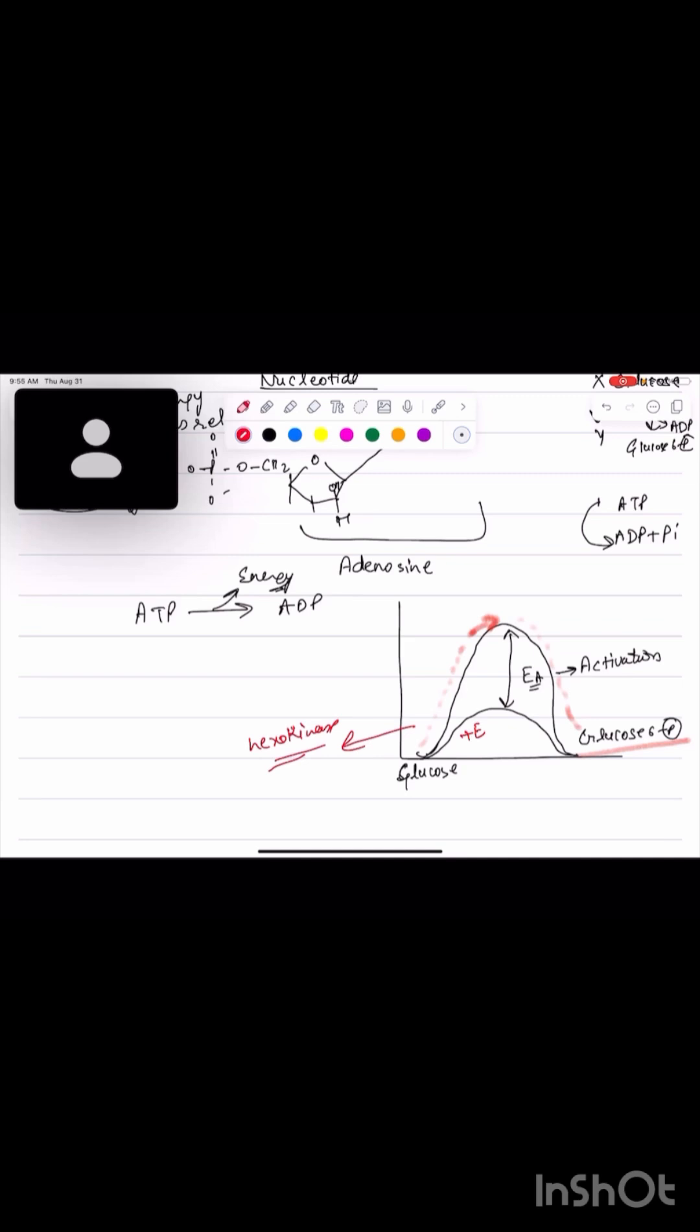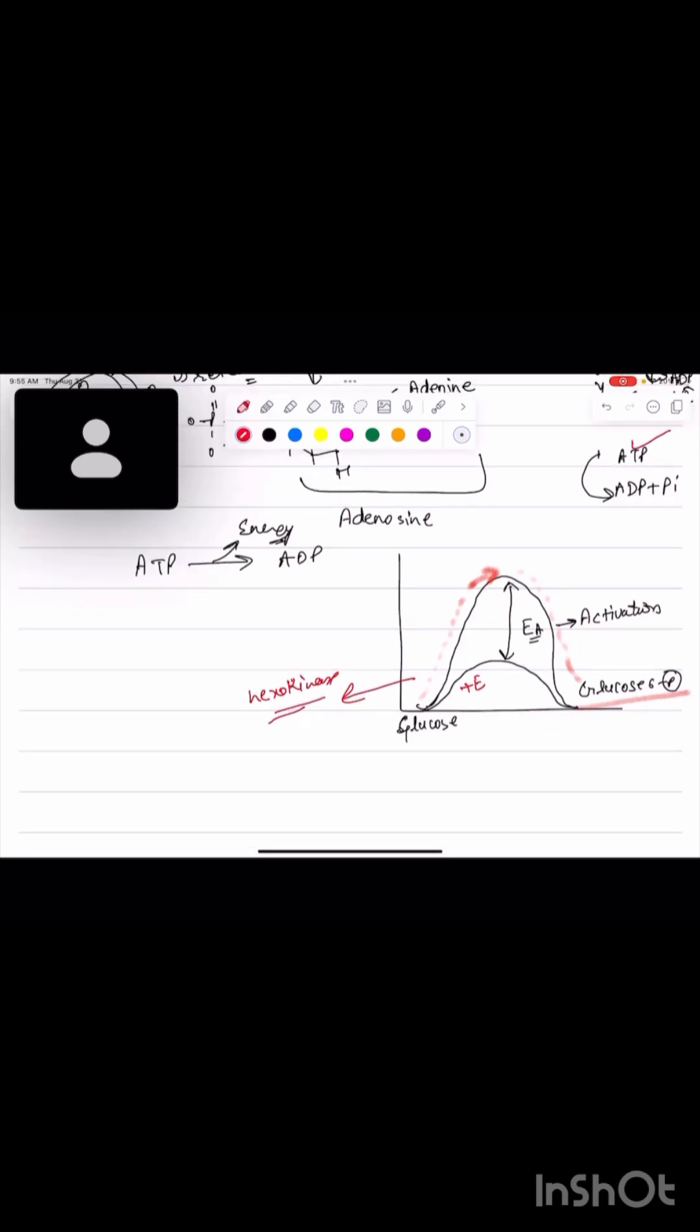Enzymes can't act alone - they require coenzymes and cofactors. This is acting as a coenzyme here. What ATP does is it will donate its phosphate group and also drive the reaction forward. Conversion of glucose to glucose-6-phosphate is a very difficult, non-spontaneous, energy-requiring reaction.